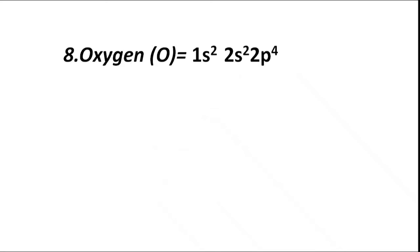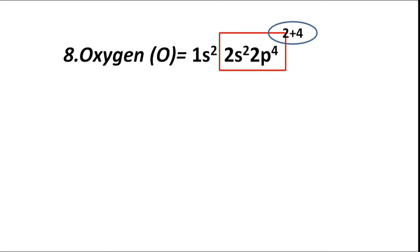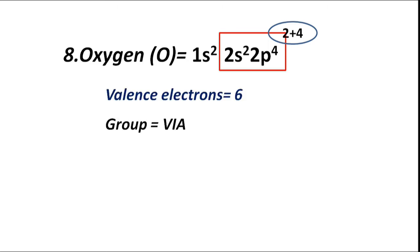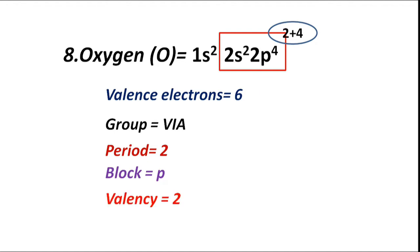Atomic number 8, oxygen (O), has electronic configuration 1s2 2s2 2p4. The valence shell is L. Valence electrons are 2 plus 4, equal to 6. Hence group VIA, period 2. Highest coefficient is 2, therefore second period. Block P — valence electrons fill the p sub-shell.